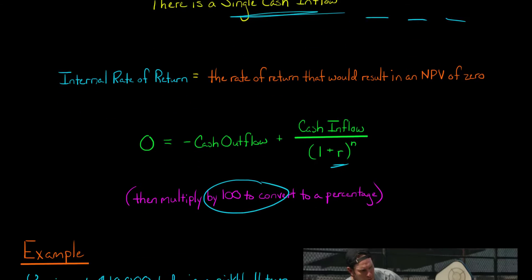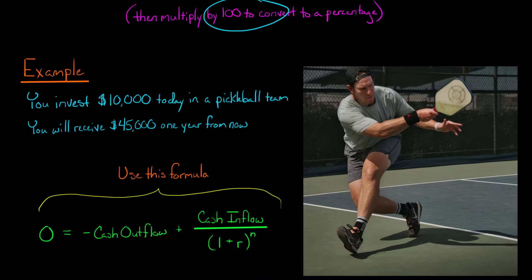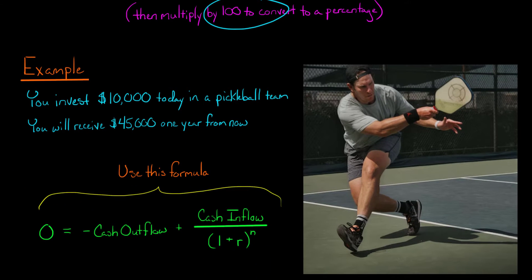So let's do an example. Let's say that you invest $10,000 today in a pickleball team and you expect to receive a single cash inflow of $45,000 one year from today. So we've got $10,000 going out the door today and $45,000 cash inflow one year from today. So we're going to use our formula right here.